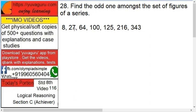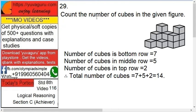8 is a cube of 2, 27 is 3 cubed, 64 is 4 cubed, 125 is 5 cubed, 216 is 6 cubed, and 343 is 7 cubed. But 100 is no one's cube — so 100 is the odd one out.